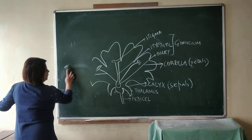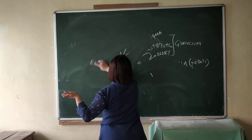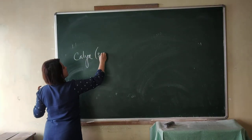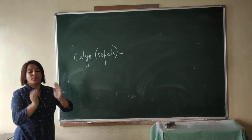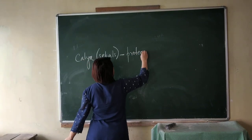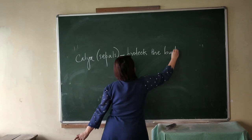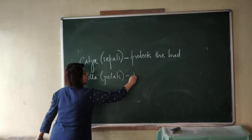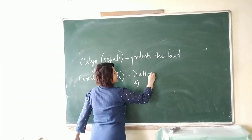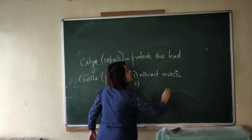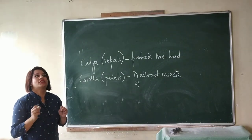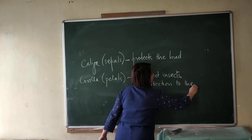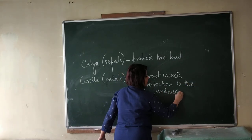So I'll rub this off and write down the functions of the four whorls of a flower. The calyx, which consists of sepals, protects the bud. Next, the corolla or the petals has two functions: the first function is to attract insects, and the second is it provides protection to the androecium and gynoecium.